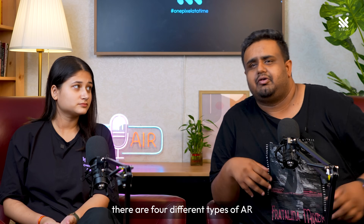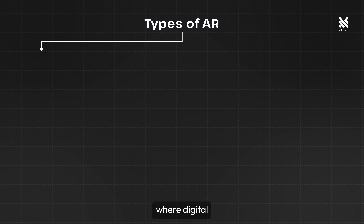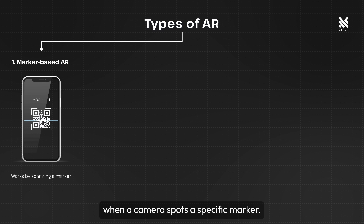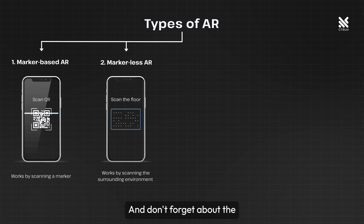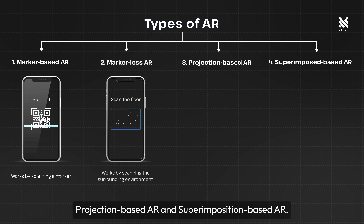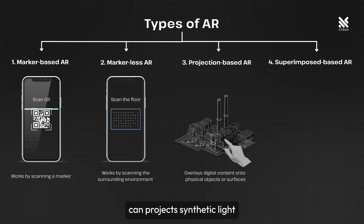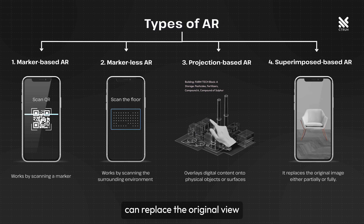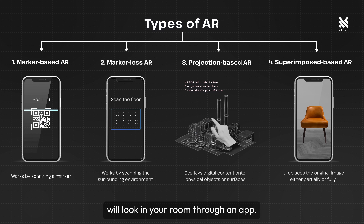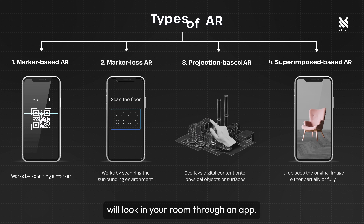Did you know there are four different types of AR? Marker-based, where digital animations appear when a camera spots a specific marker. Then there's marker-less AR, great for navigation apps because it uses GPS and other sensors instead of markers. And don't forget about projection-based AR and superimposition-based AR. Projection-based AR can project synthetic light on physical surfaces, making it interactive, while superimposition-based AR can replace the original view with an augmented view — for example, seeing how furniture will look in your room through an app.